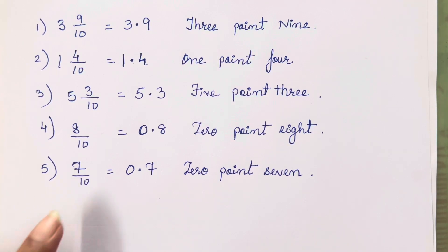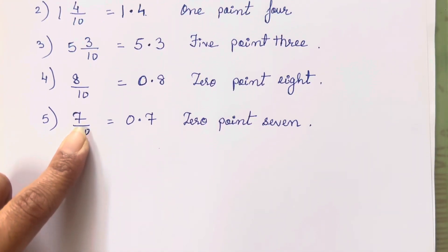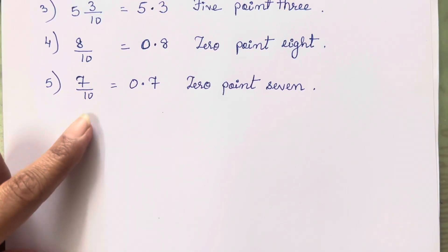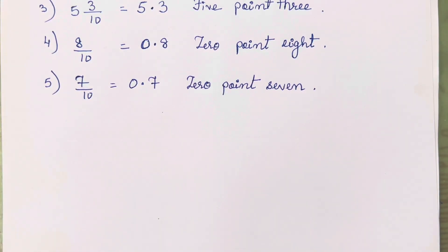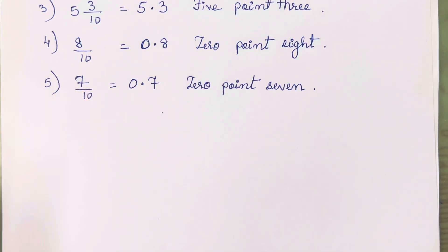Now I will show you the same numbers in the form of 100 and 1000 as well, as it is going to be the next topic of our problem set. I am going to give you a slight revision so that it will be clear what you have to do in the next exercise, and why you have to first concentrate on 10s, then 100, then 1000.